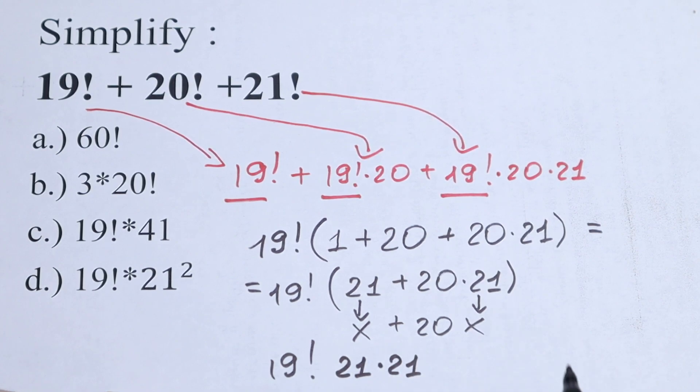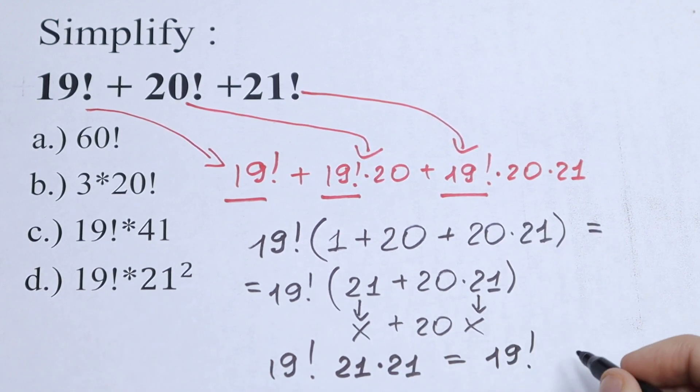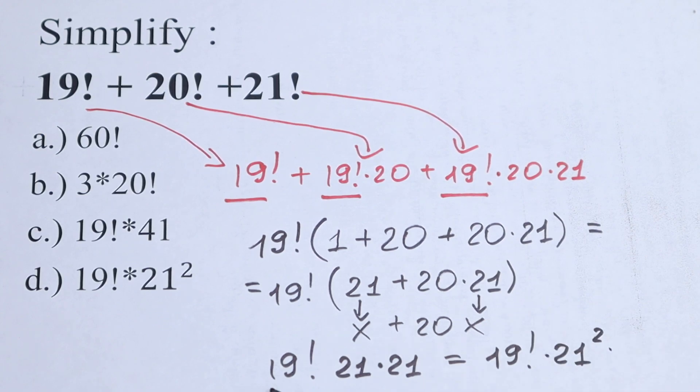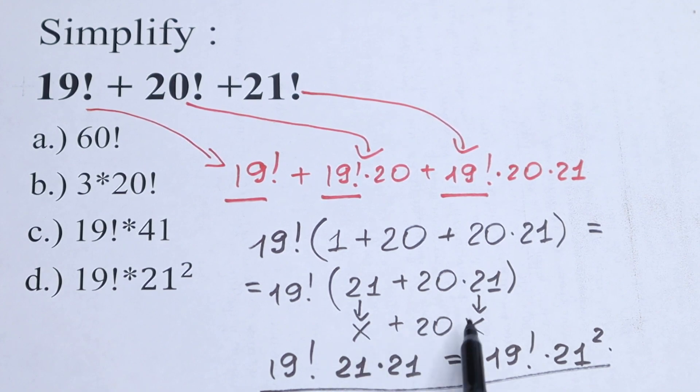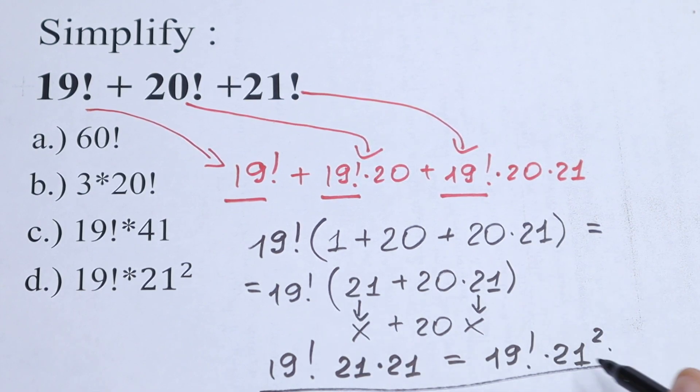And if we simplify this a little bit, we will have that this will be equal to 19 factorial times 21 squared. And this is our answer. We can write this as 21 times 21 will be equal to 21 squared. And from here option D.